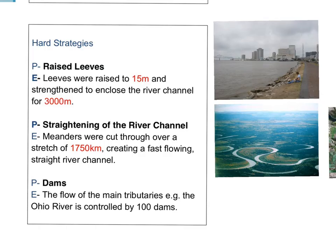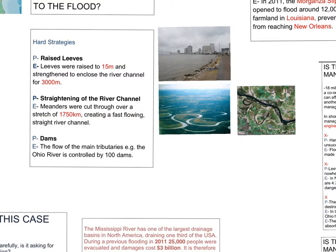The first hard strategy to consider are levees. Levees are a natural part of the river system and come about when the river floods on the floodplain and the heaviest material is deposited first, leaving a built-up bank along the side of the river. Man-made levees are then added to increase the height and contain the river channel. In the case of the Mississippi, this was done for almost 3,000 kilometres, with levees raised to 15 metres higher than the water level.